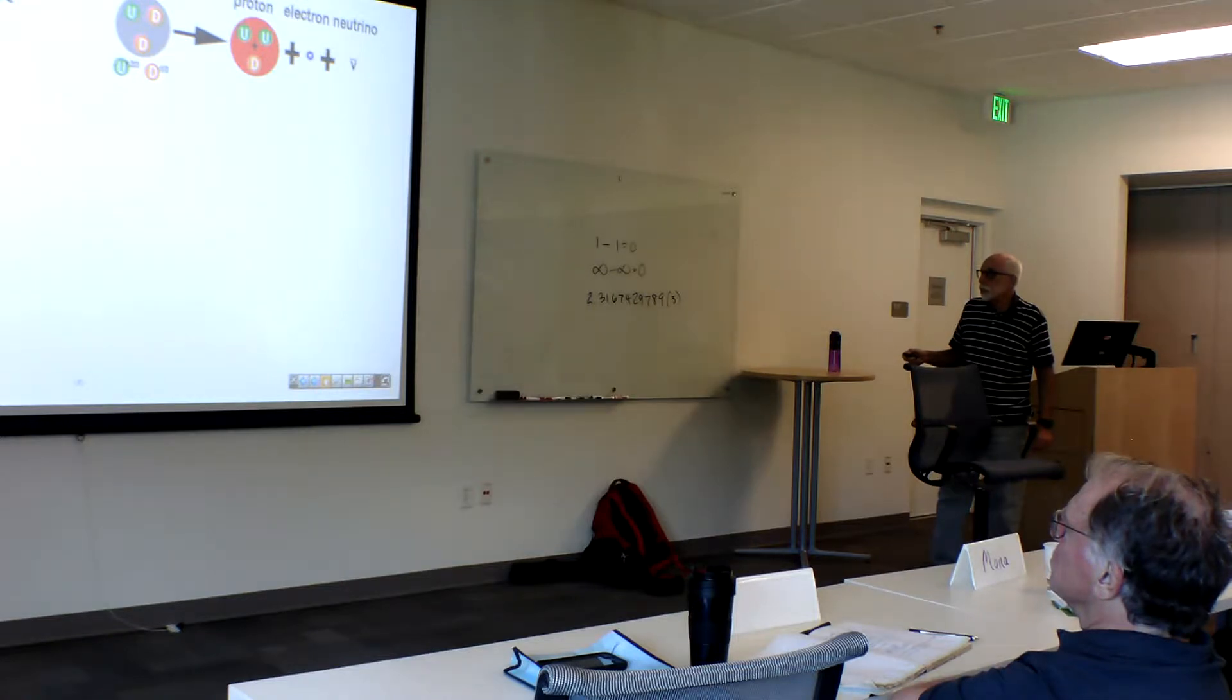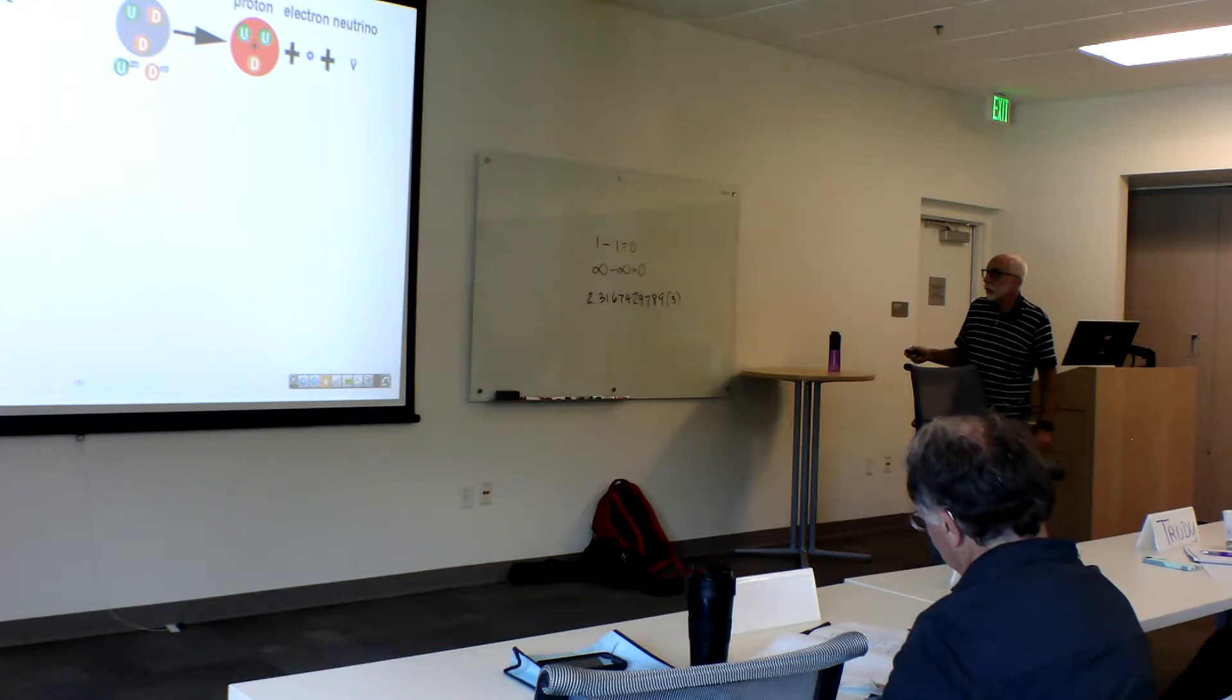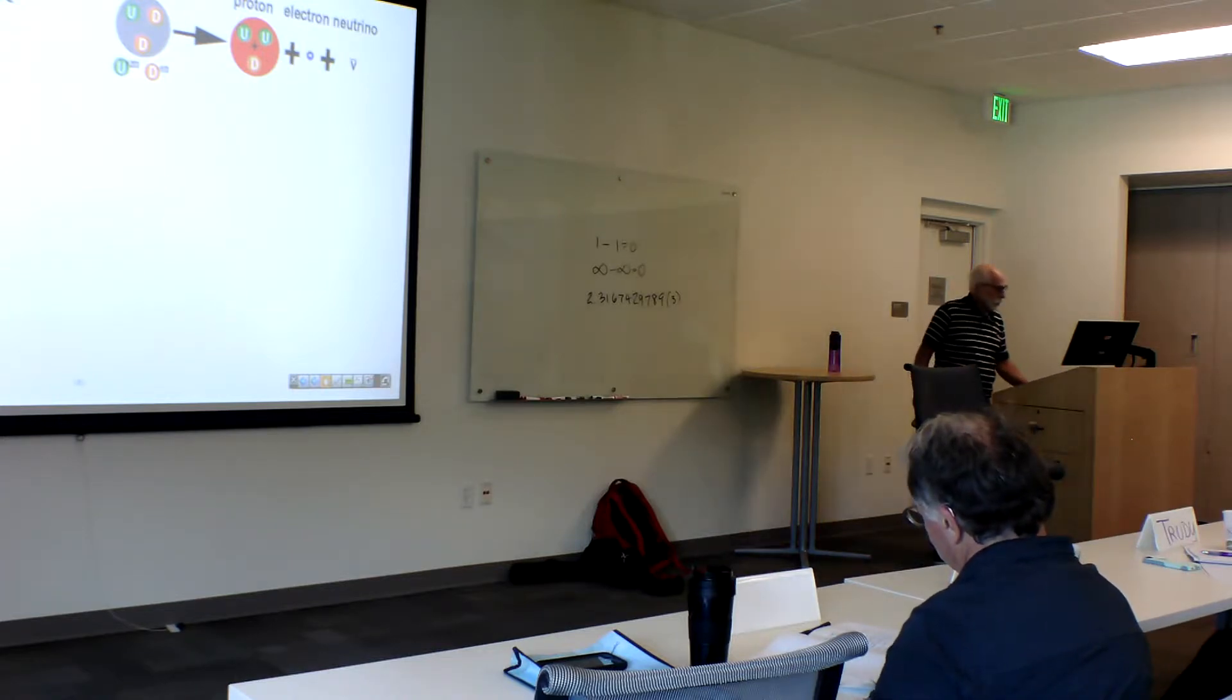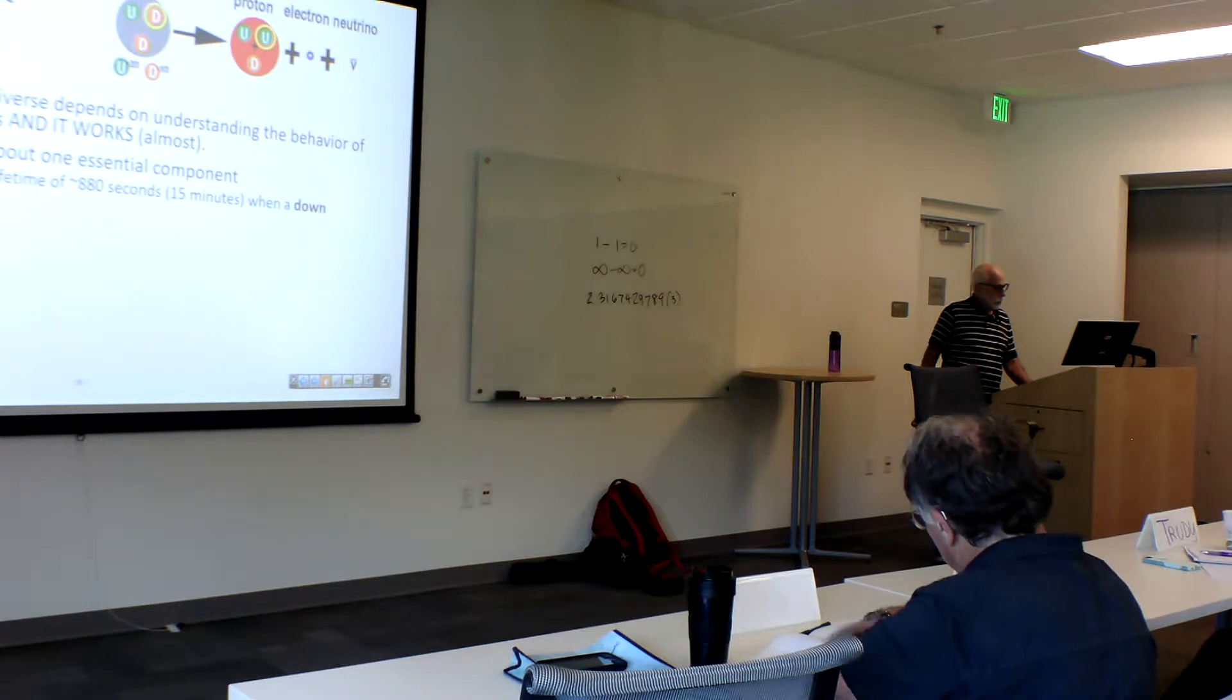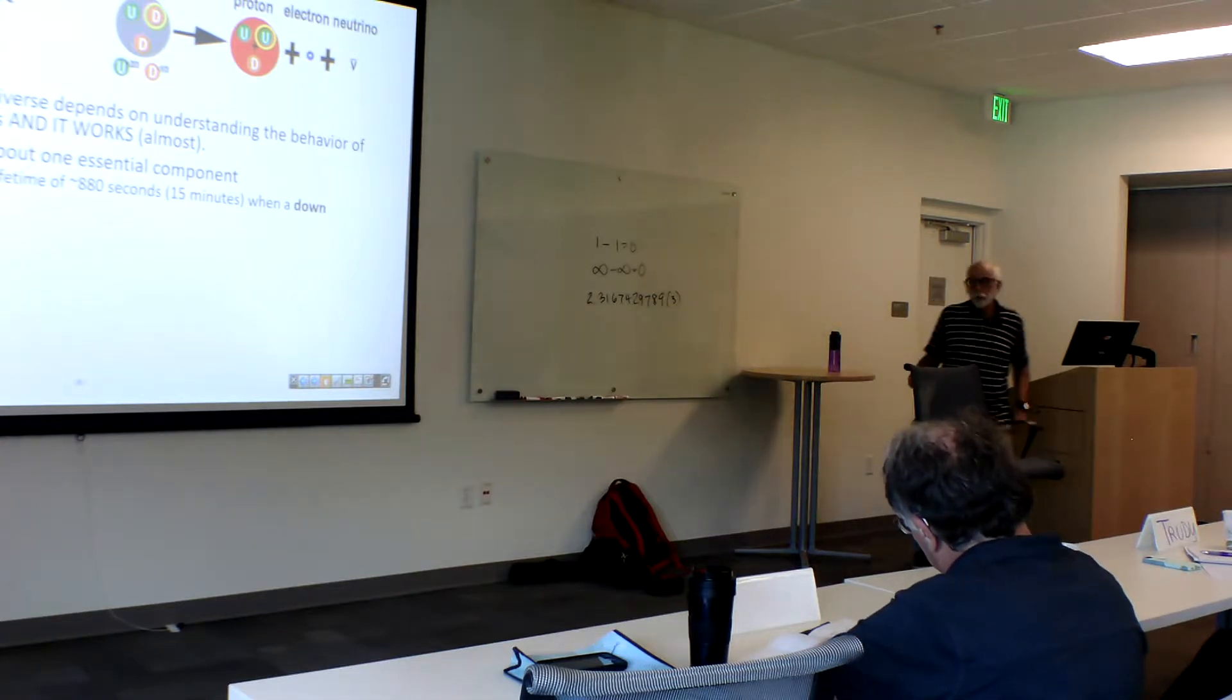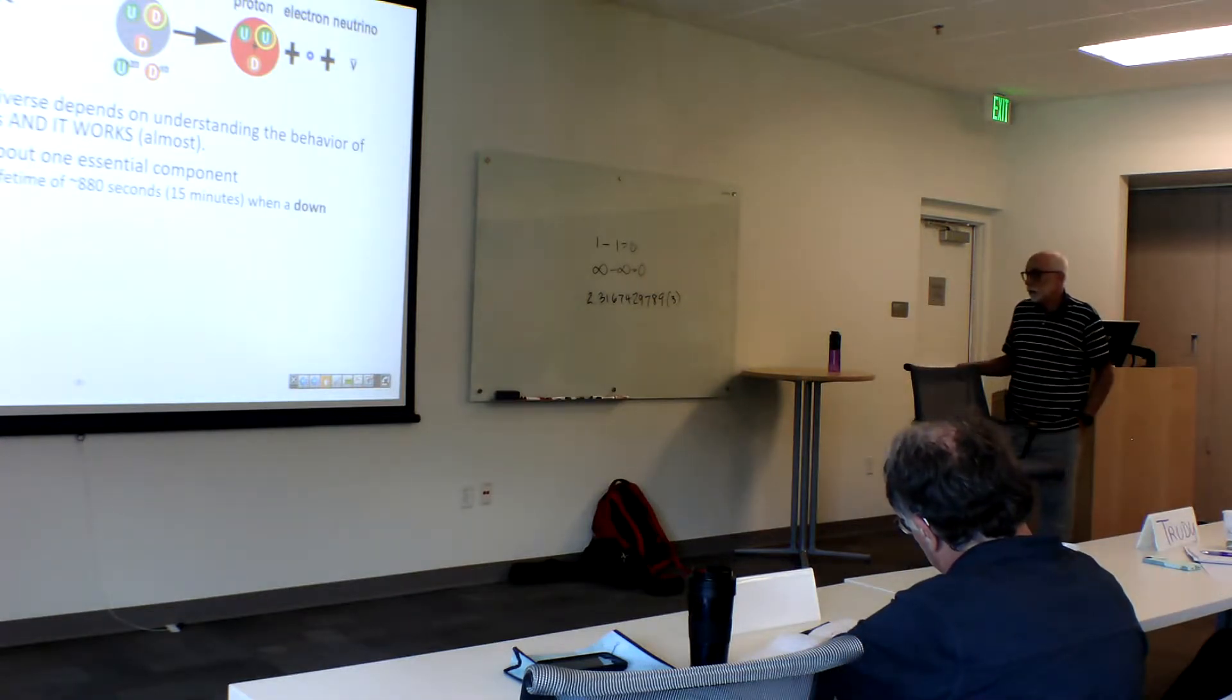It decays. One down quark becomes an up, and we get a proton, electron, and a neutrino. And here, for the first time, I finally put up the lifetime of a neutron. About 15 minutes.